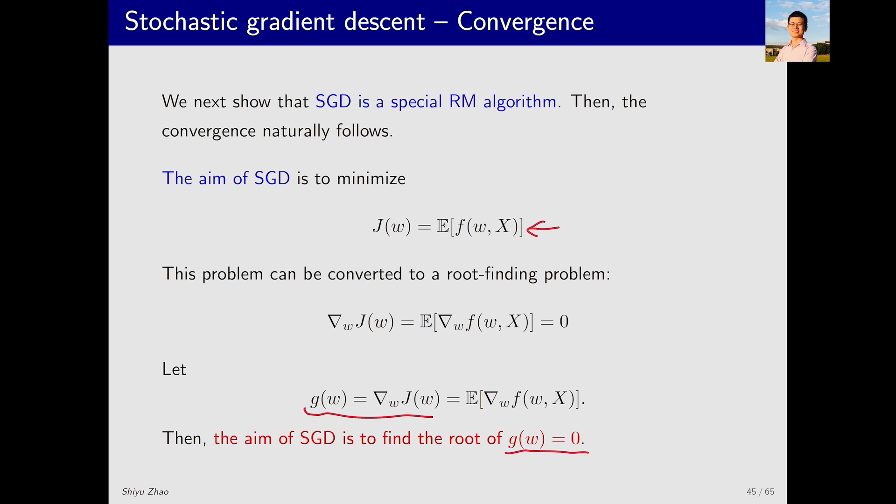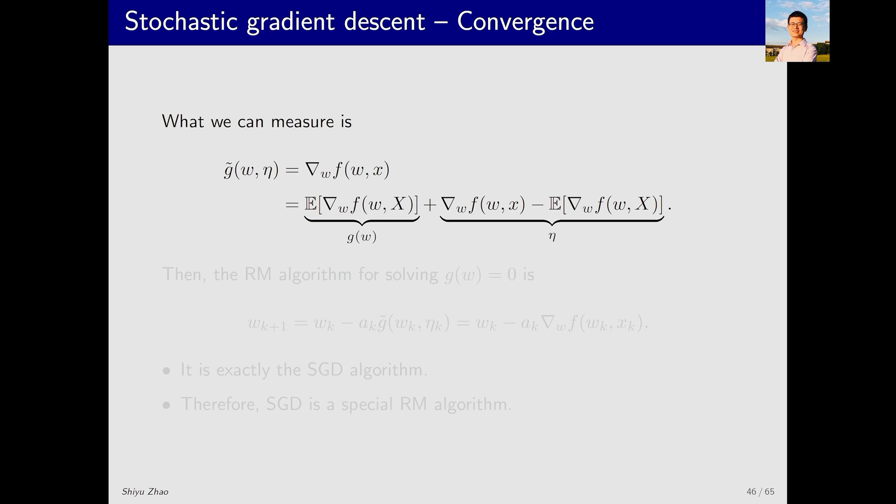How to solve the equation G(w) equals zero? We already know that we can use the RM algorithm to solve it. Here the value of G(w) is unknown, however we have some measurements, represented by G tilde. The measurement G tilde is the stochastic gradient, which equals G(w) plus some noise.